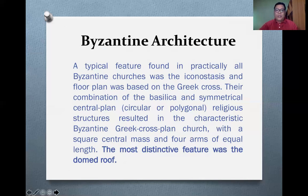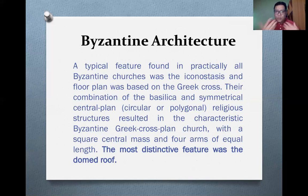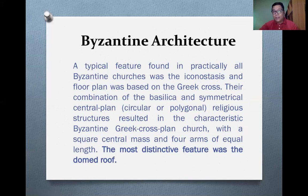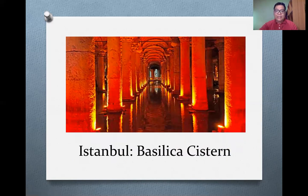The third type of architecture that influenced modern architecture is Byzantine architecture. A typical feature found in practically all Byzantine churches is the iconostasis, and the floor plan was based on the Greek cross. The combination of the basilica and symmetrical central plan — usually circular or polygonal religious structures — resulted in the characteristic Byzantine Greek cross-plan church with a square central mass and four arms of equal length. One distinctive feature you can identify in a Byzantine architectural structure, such as a basilica or church, is the domed roof. One good example is the Basilica Cistern in Istanbul.